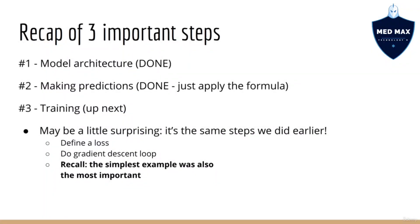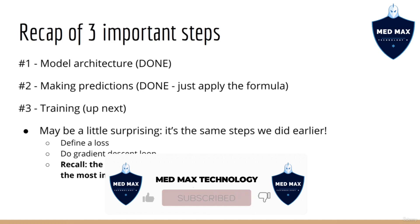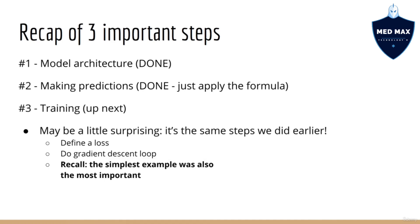Okay, so at this point, let's recap the three concepts we need to cover. Number one, model architecture. Number two, using the model to make predictions. And number three, model training. We just covered number one and number two. You know what the model architecture is, and you know how to use it to make predictions. Basically, given some input x, you know how to plug it into the previous formula to get some output prediction y hat. The final step is training.